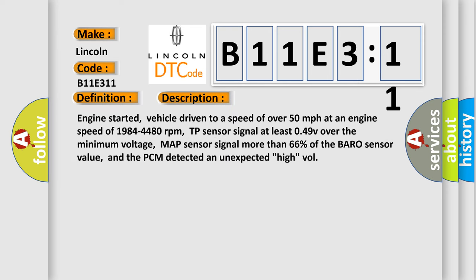Engine started, vehicle driven to a speed of over 50 miles per hour at an engine speed of 1,984 to 4,480 revolutions per minute, TP sensor signal at least 0.49V over the minimum voltage, MAP sensor signal more than 66% of the BARO sensor value, and the PCM detected an unexpected pipe volume.